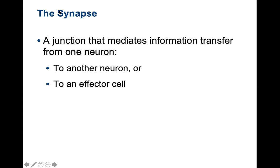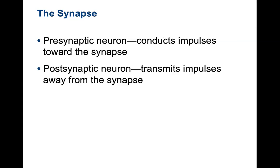The synapse is a junction that mediates information transfer from one neuron either to another neuron or to an effector cell — which could be a muscle cell or a gland. A presynaptic neuron is one that conducts impulses toward the synapse, and a postsynaptic neuron transmits impulses away from the synapse.